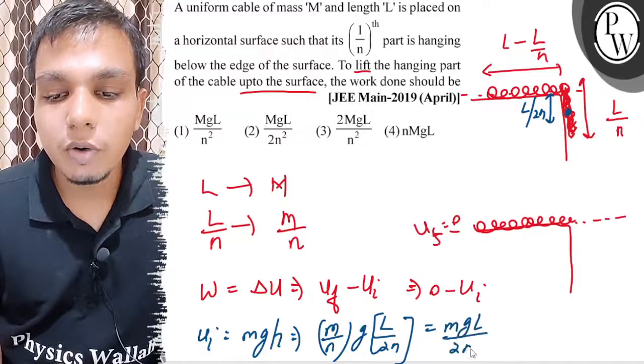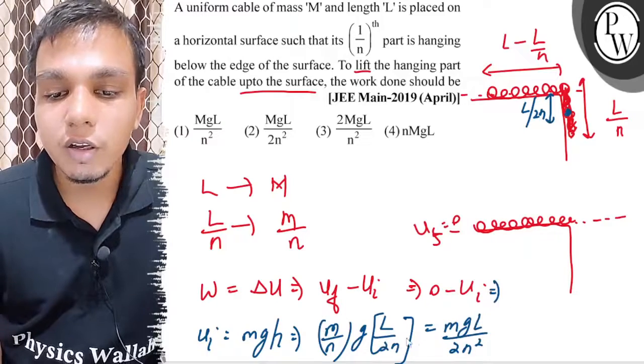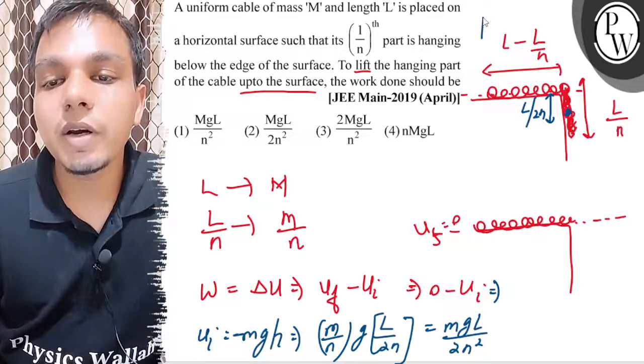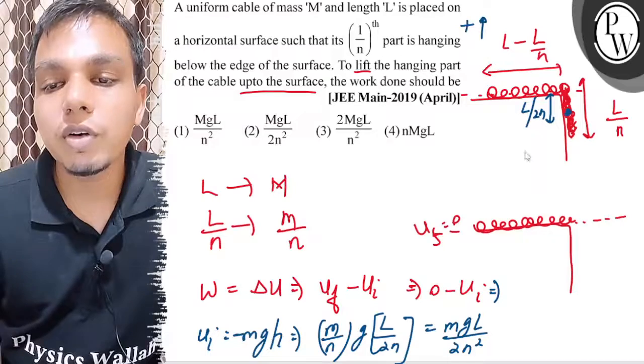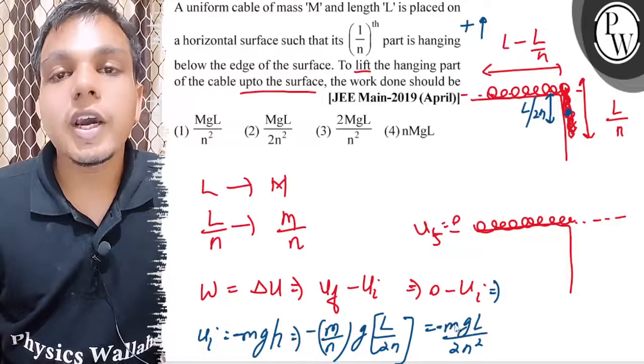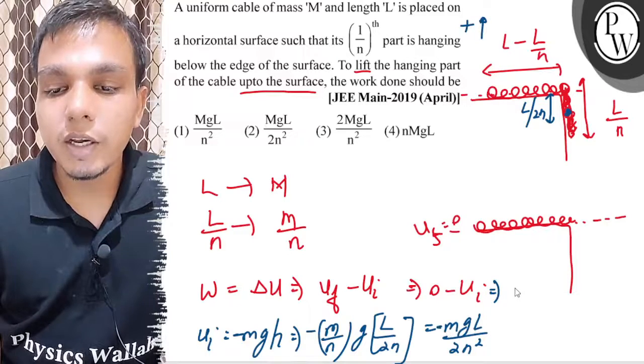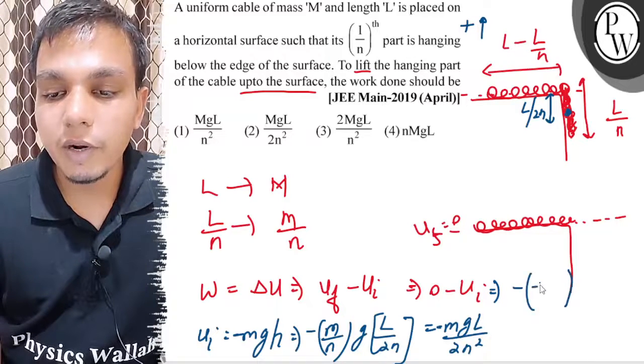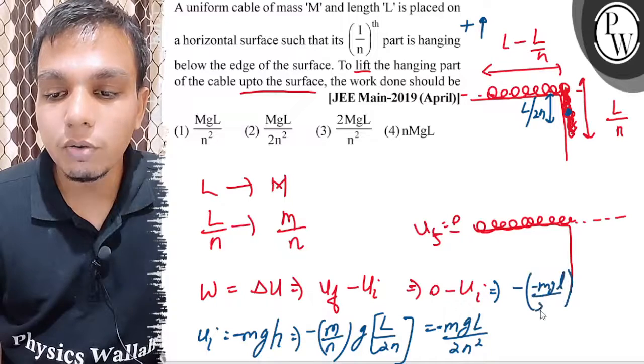So here we substitute. This will be negative because in the upward direction the potential energy is positive and in the downward direction it's negative. So this will be minus MGL divided by 2N squared.